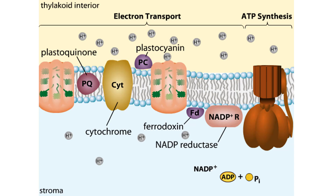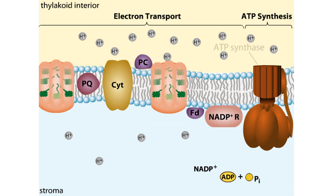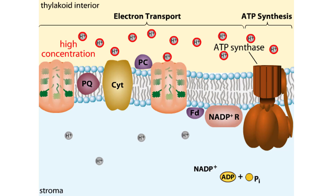In addition to the electron transport chain, thylakoid membranes contain a type of protein complex called ATP synthase. ATP synthase uses the high concentration of hydrogen ions inside the thylakoid as a source of energy. The synthase taps this energy to create ATP molecules, which fuel later stages of photosynthesis.